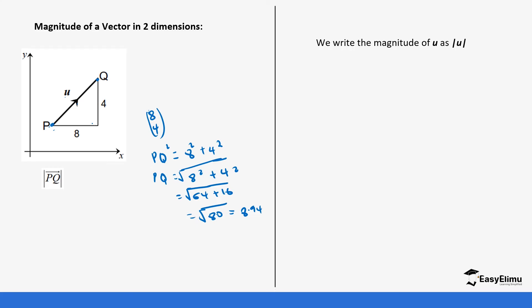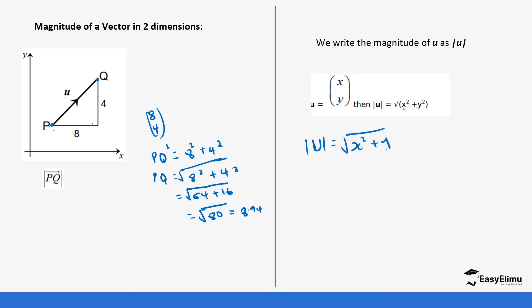In other words, when looking at magnitude, if you are given the x and y coordinates, it is the same as taking the square root of x² + y². You do not necessarily have to draw the vector, but the magnitude is represented as the square root of x² + y², which gives the length of the directed line segment.